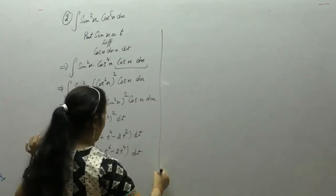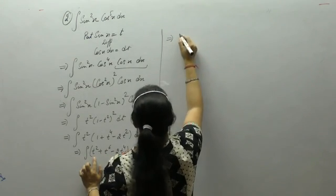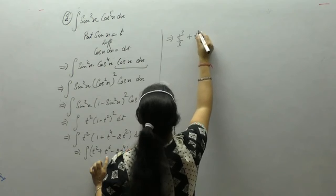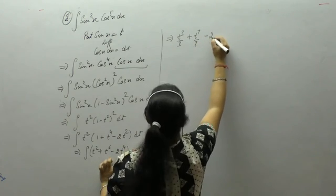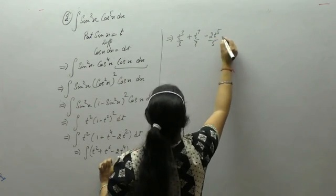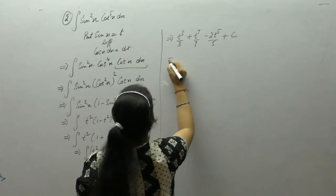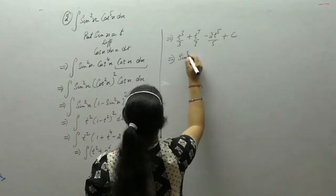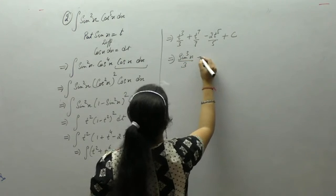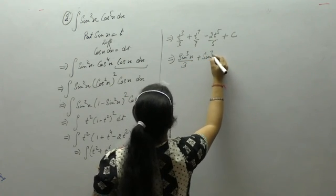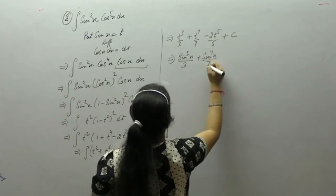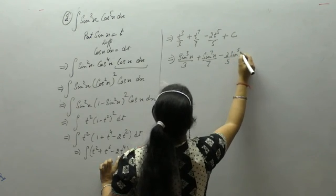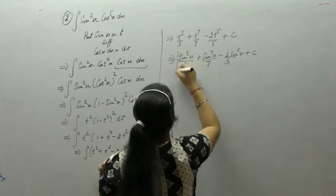Applying the power rule: the integral of t² is t³/3, t⁶ gives t⁷/7, and t⁴ gives t⁵/5. Substituting back t = sin x, the answer is sin³x/3 + sin⁷x/7 − (2/5)sin⁵x + c.